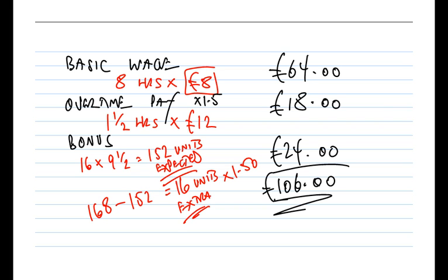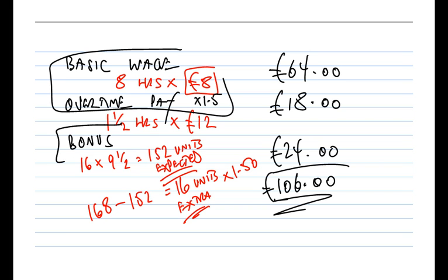I hope you found that useful, thinking about the different ways that Phoebe can be paid - the different forms of remuneration. We've got an element of time-based pay, looking at the number of hours that Phoebe has worked including a bit of overtime, and then we've got a performance-related bonus to worry about. I hope you found that useful, and maybe I'll see you next time.